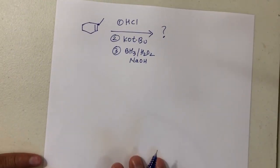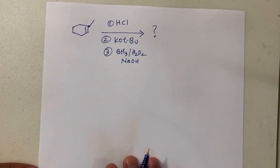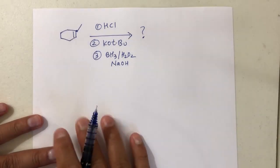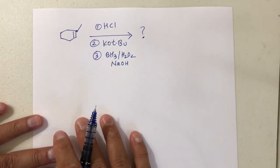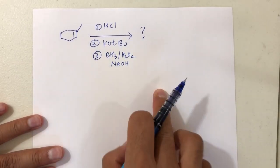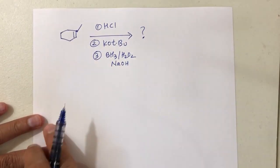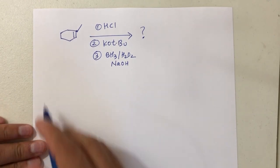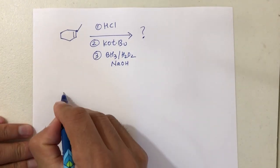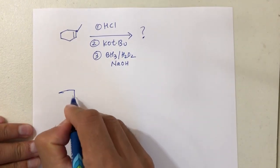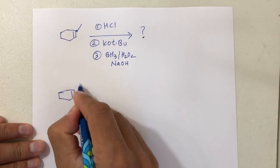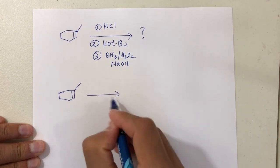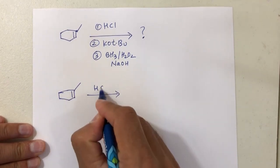Let's do one more example. If you want, you can pause the video here, work it out, and then look at the answer. So here, let's split it. We have a double bond — that will react with number one, HCl.